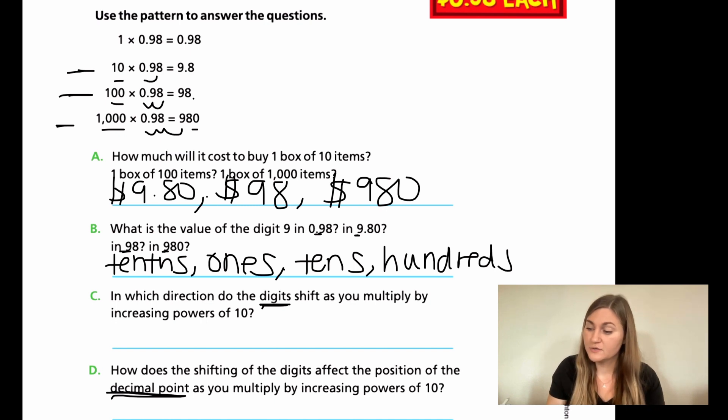So in which direction do the digits shift? So look at the numbers. The numbers are moving to the left. It's going tenths, then to ones, then to tens, then to hundreds. That's going to the left. The opposite is true. If the digits are going to the left, that means the decimal place, remember how I was moving it here and I can put the arrow on the edges of these.